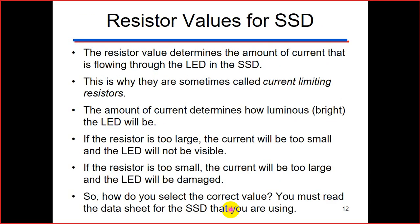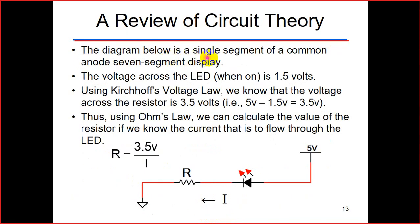Now we will consider the resistor value for the seven segment display. The resistor value determines the amount of current flowing through the LED — this is why they are called current-limiting resistors. The amount of current determines how luminous or bright the LED will be. If the resistor is too large, the current will be too small and the LED will not be visible. If the resistor is too small, the current will be too large and the LED will be damaged. You must pick the right value, so you don't damage the LED while achieving the right brightness. To select the correct value, you must read the data sheet for the seven segment display you are using.